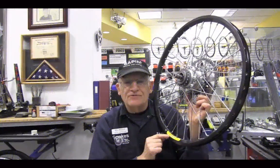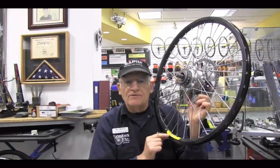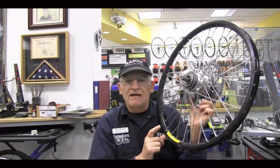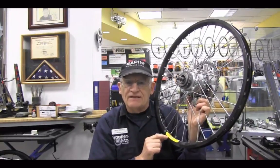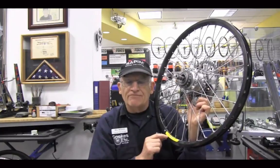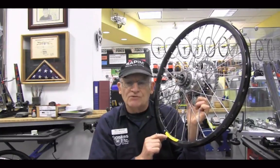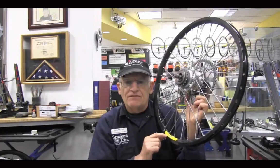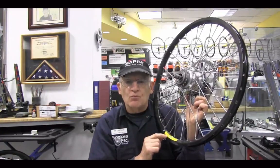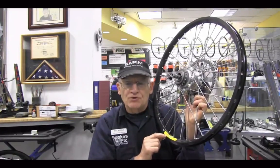I used this Velocity Cliffhanger rim because it's a very strong rim. I could get it in the 26 inch size that I needed, and I know that there's a lot of aluminum in the spoke bed, so I knew that I could drill out the spoke bed to accommodate the larger motorcycle nipples without weakening the spoke bed by too much.